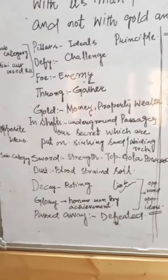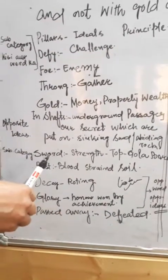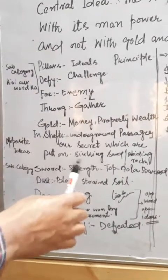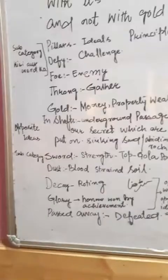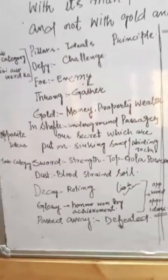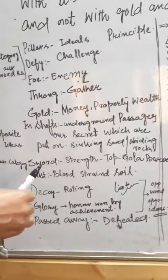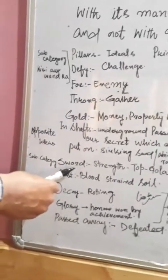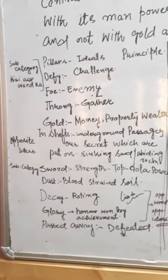Sword - here it doesn't mean sword literally. Ralph Emerson says that this is strength. Sword means strength - tanks, cannons, explosives. Sir Ralph Emerson compared the sword with that. Dust - what has become dust, blood-stained soil.